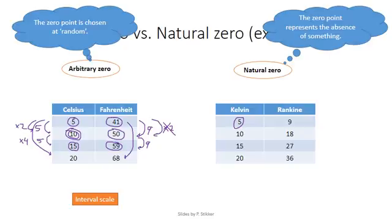Again, the difference between 5 and 10 is, of course, a difference of 5. And if we look here at Rankine, then that's a difference also of 9. And if we go from 10 to 15, that's again a difference of 5. And if we go here to 27, that's again a difference of 9. So just as with the interval scale, the intervals between two values is the same no matter which scale you convert it to.